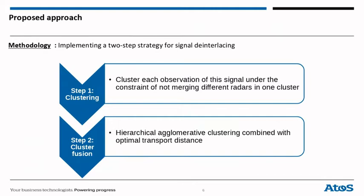We have implemented a two-step strategy for signal deinterlacing. First, a clustering algorithm is used to separate the observations in the frequency pulse-width plane. Then, we will use the cluster output of step one as a feature for a hierarchical agglomerative clustering combined with optimal transport distances.